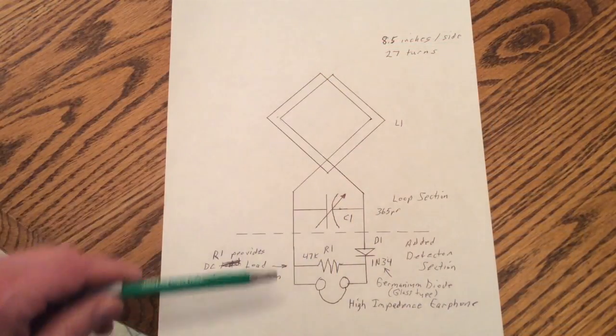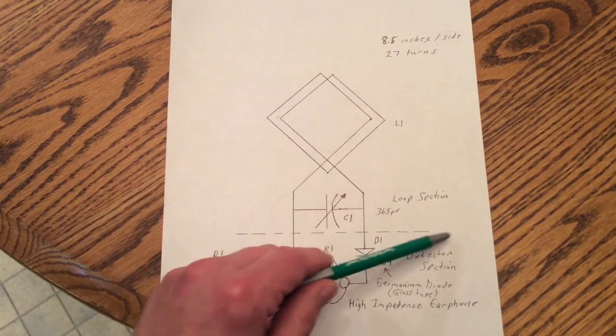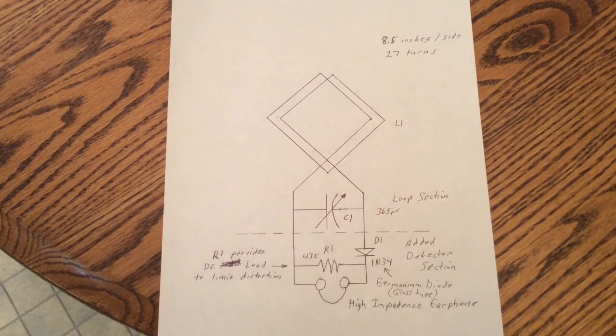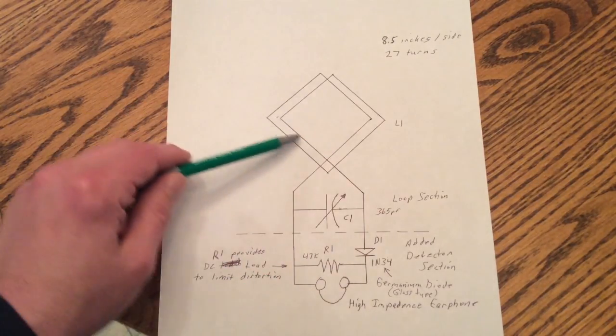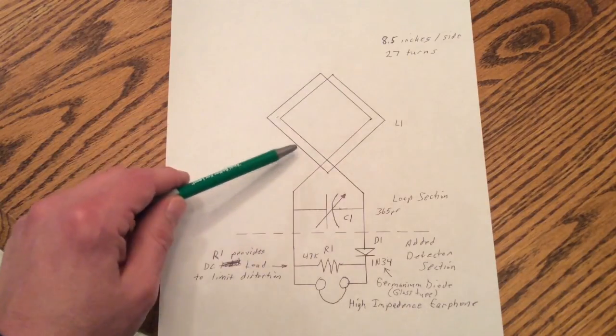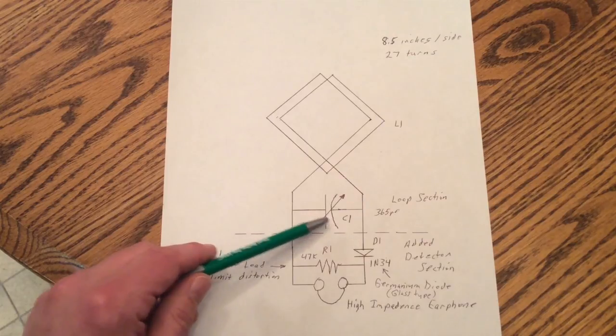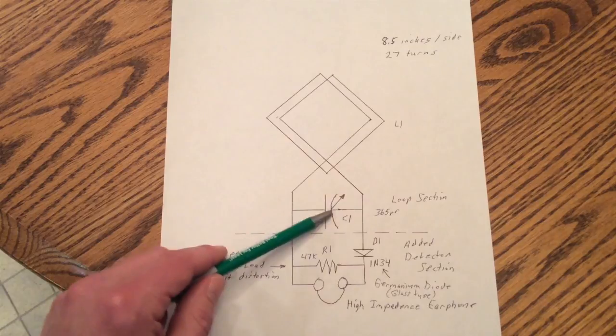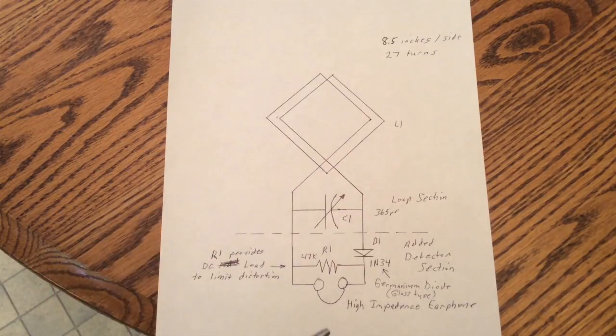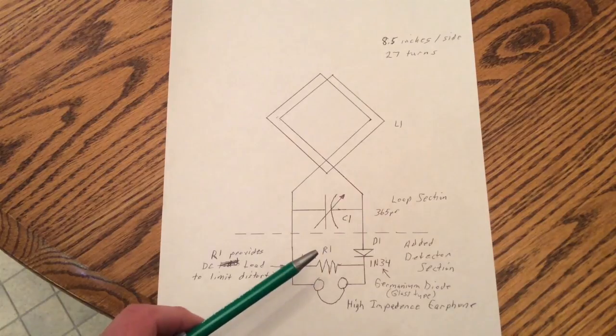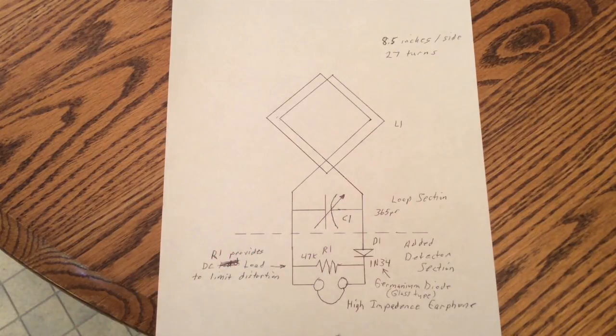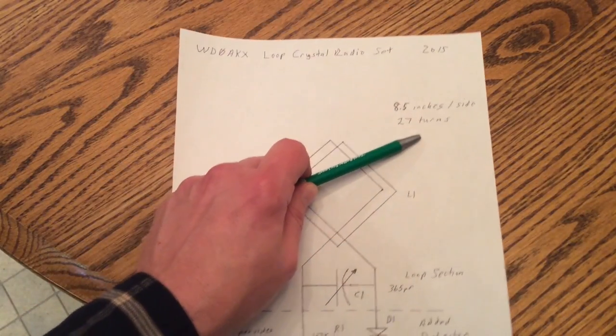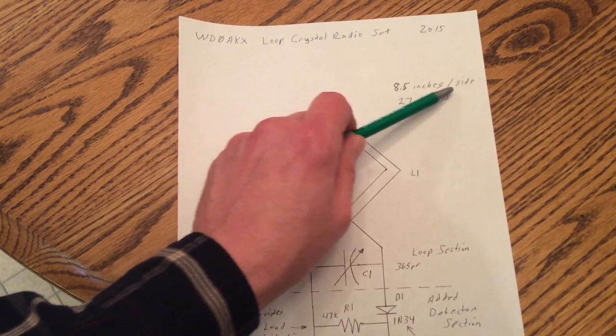Okay, here's a basic diagram of what I have. Basically everything above this dotted line is the loop antenna by itself without the addition to make it into a crystal radio set. So you have your loop, a turn of several turns of wire. And then you have your variable capacitor that you use to tune the loop. And that's a 365 picofarad that I have. I've just used one section of an old AM tube type radio tuning capacitor for that. And my loop is made up of 27 turns of wire. And I have 8.5 inches on a side.